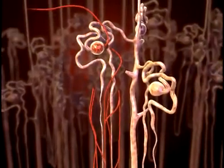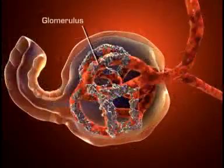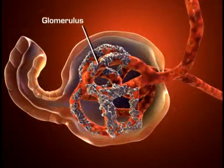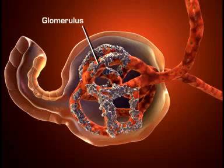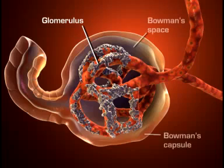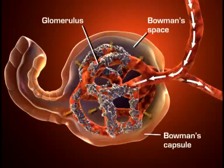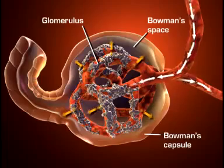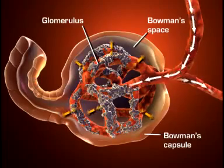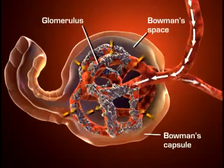Each nephron consists of a glomerulus and a system of tubules. The glomerulus is a unique high-pressure mass of capillaries that filters the blood. The glomerulus is encased in a thin, double-walled capsule called Bowman's capsule. The space inside the capsule and surrounding the glomerulus is called Bowman's space.